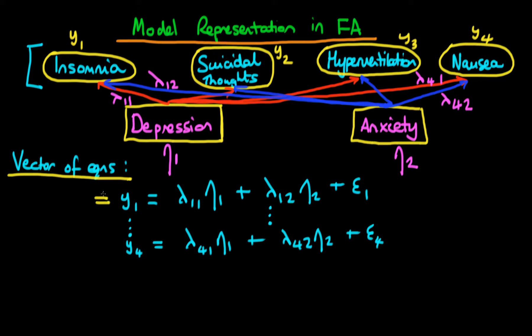So we had a regression equation for insomnia and we also had a regression equation for nausea, and the dots here indicating that we could also write the same relationship for suicidal thoughts and also for hyperventilation. It is important to stress that each of these equations contains things which are fixed across individuals in our sample and things that vary.